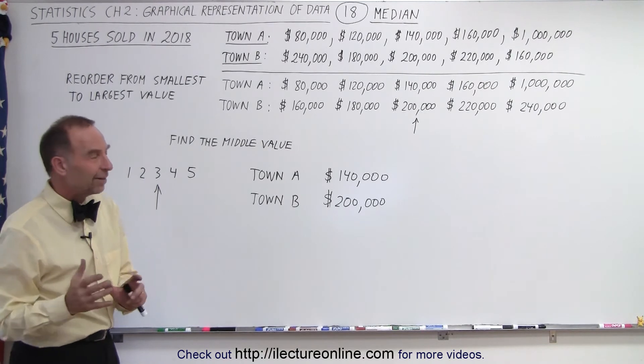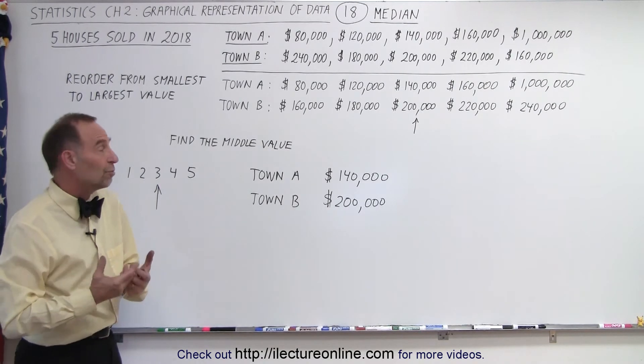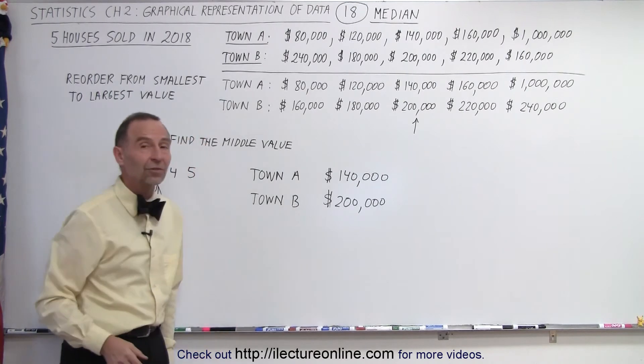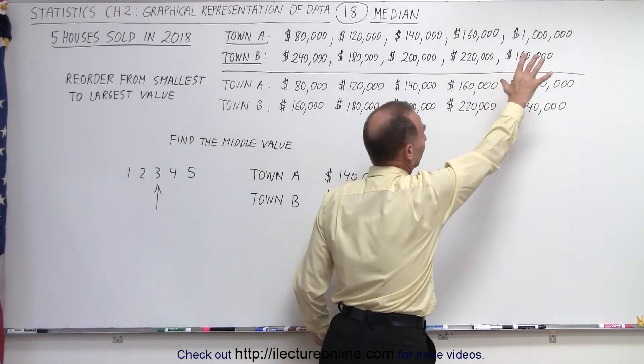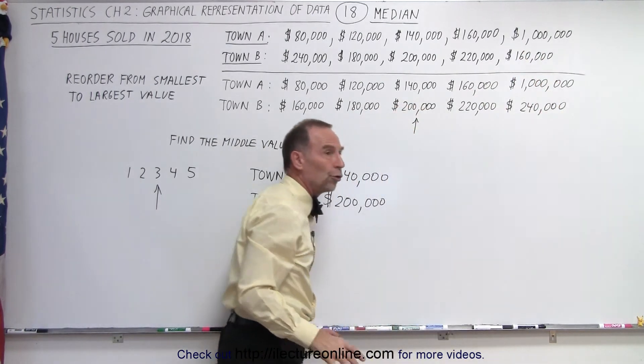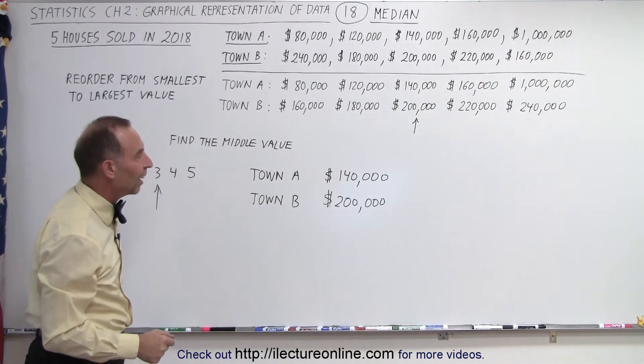So you're not misled by the average value which made it seem that town B was a much cheaper town to buy a house in than town A because of that huge outlier. An outlier is an unusually large or unusually small value compared to the rest of the data set.